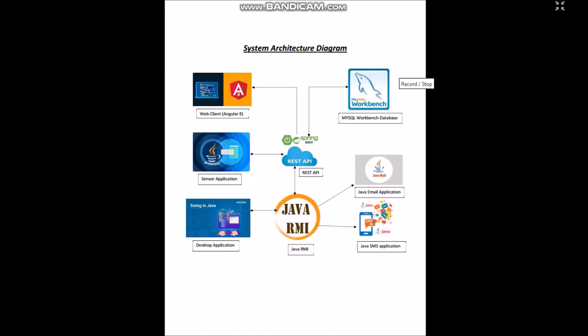Today we are going to explain a fire alarm system built with several technologies. The web client application is built using Angular, the desktop application using Java Swing, the database is MySQL Workbench, and the REST API — which connects all the distributed systems as one unit — is created using the Spring Boot framework.